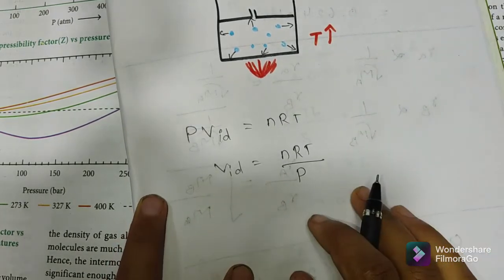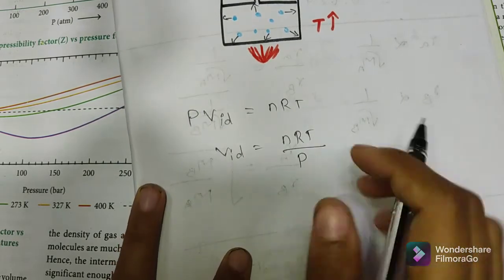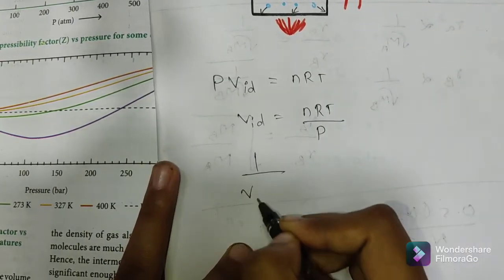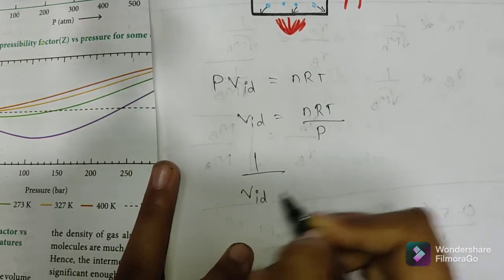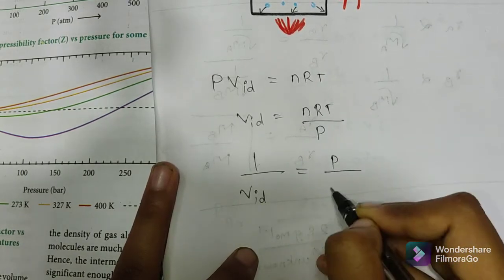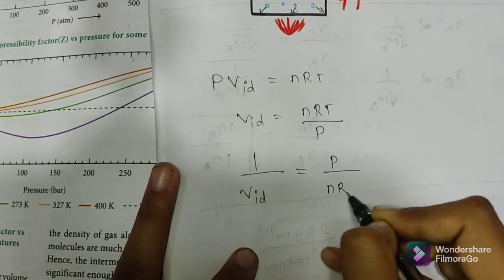So substituting, 1 / V_ideal = P / nRT. Therefore Z = V_real / V_ideal.